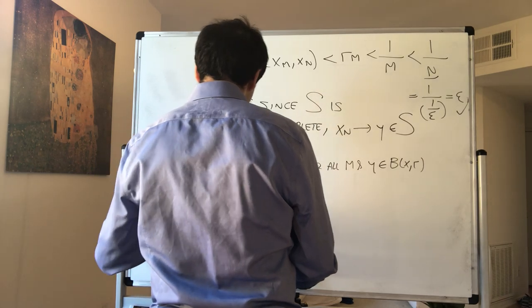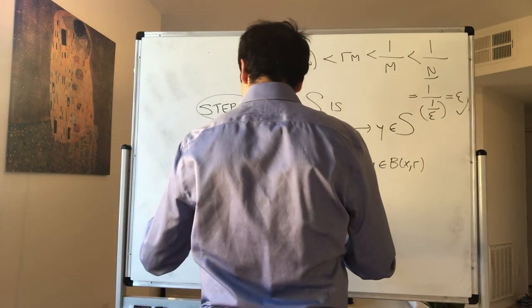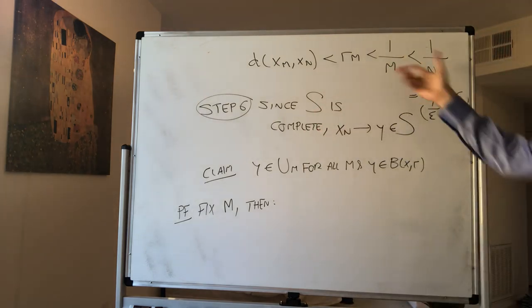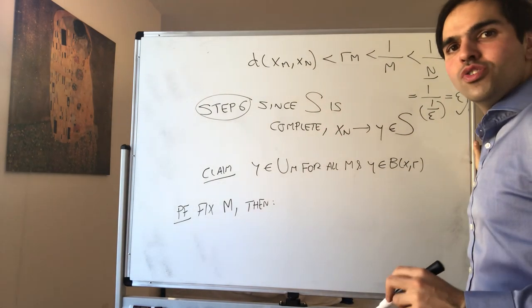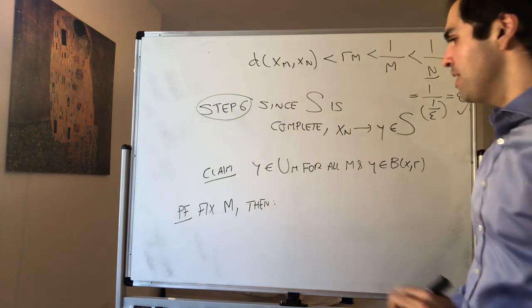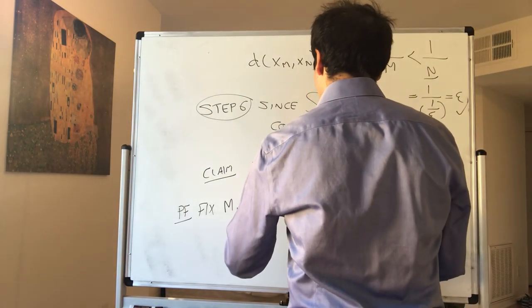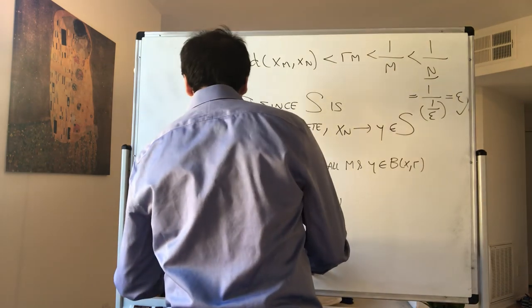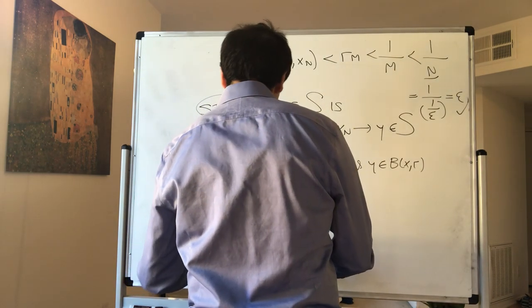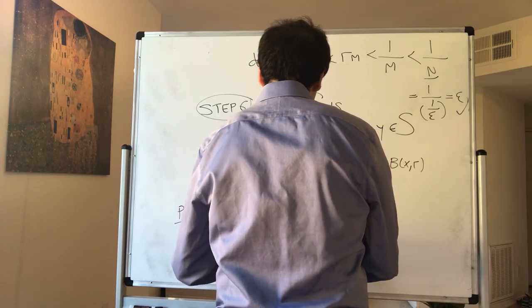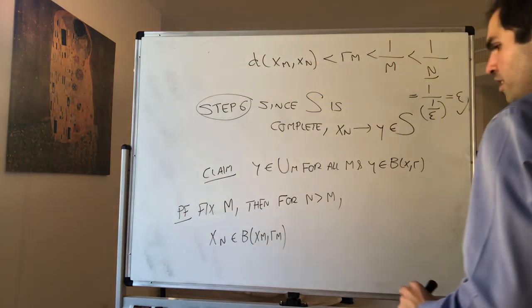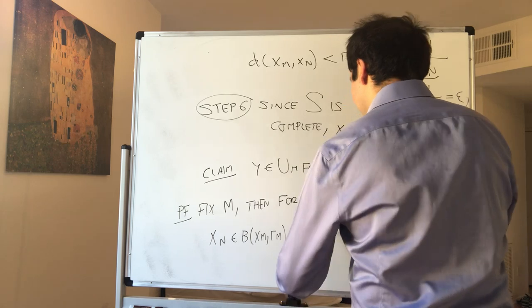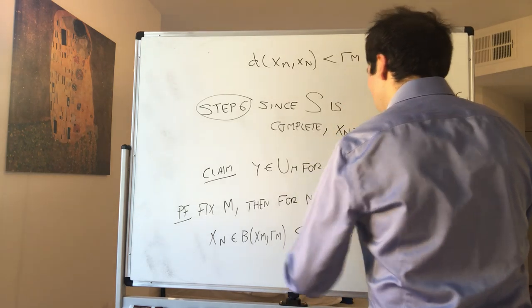Proof: fix m. Then what do we know? And by the way, so far you're like, where did we really use the closure? Well, not yet, except for now. Fix m. Then for n large enough, so for n bigger than m, remember we have our little lemma. We know that xn is in the ball centered at xm and radius rm. However, this is included of course in the ball centered at xm and radius rm closure.